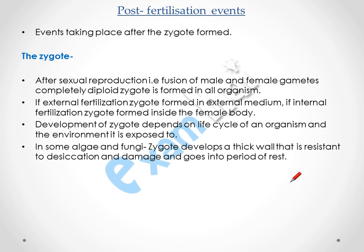Now, post-fertilization events. The events taking place after the zygote is formed are called post-fertilization events. After fertilization the zygote is formed. In sexual reproduction, when the fusion of male and female gametes takes place, a zygote is formed in all organisms. The male gametes are haploid, so when haploid gametes fuse they form a diploid zygote. If external fertilization, the zygote forms in the external medium; if internal fertilization, the zygote forms inside the body of the female organism.